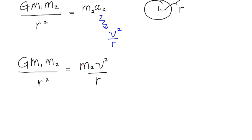Now if there's an m2 over here and an m2 over there, I can divide by m2 on both sides. I can multiply by an r on both sides. And what I'm left with is that G m1 over r is equal to v squared.